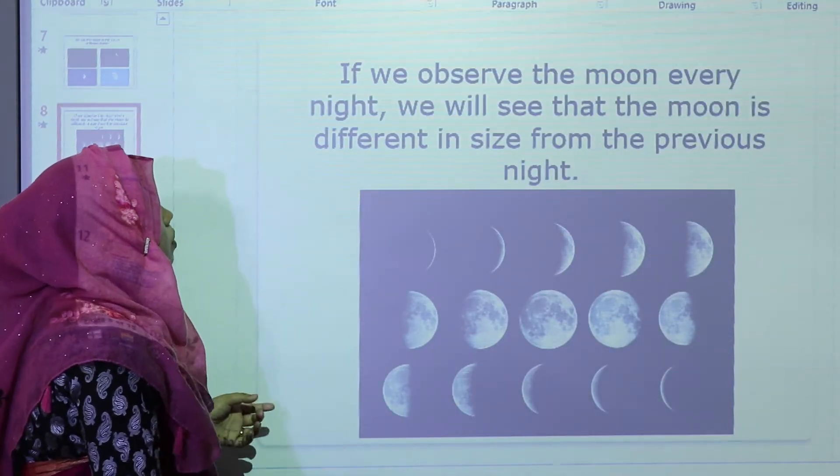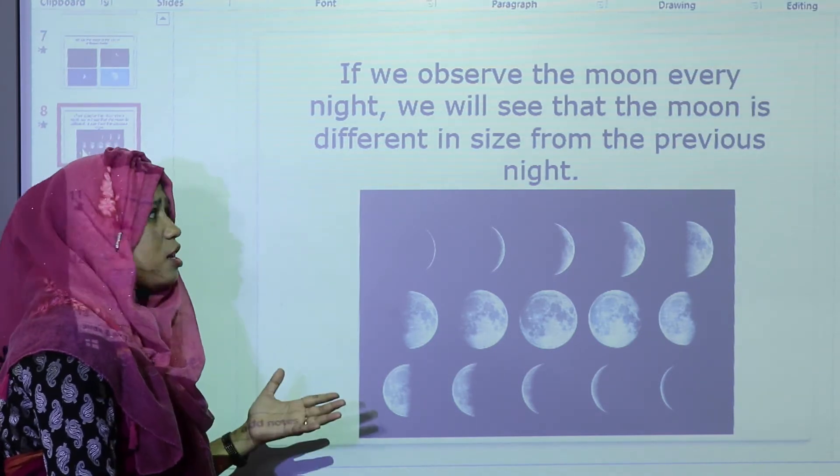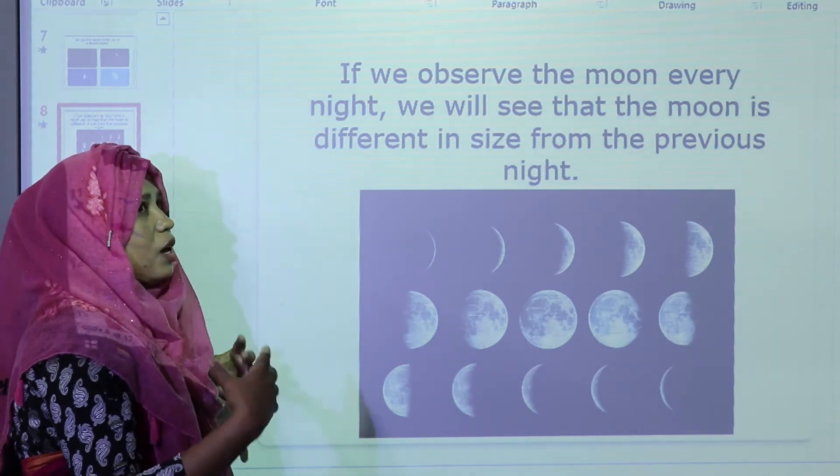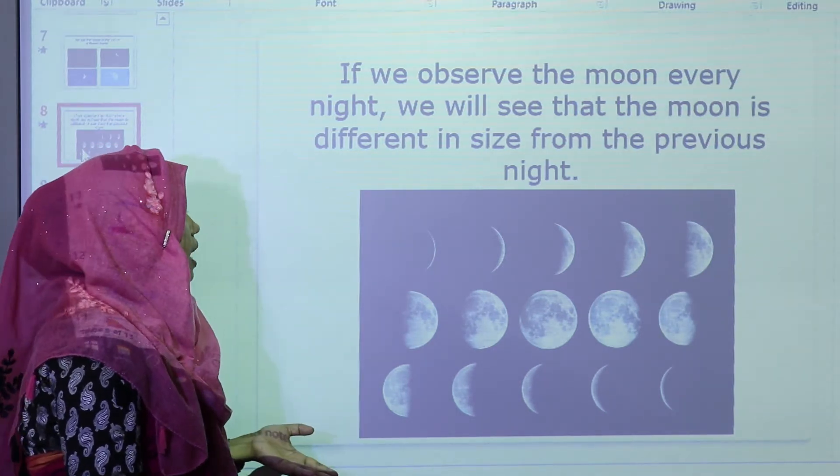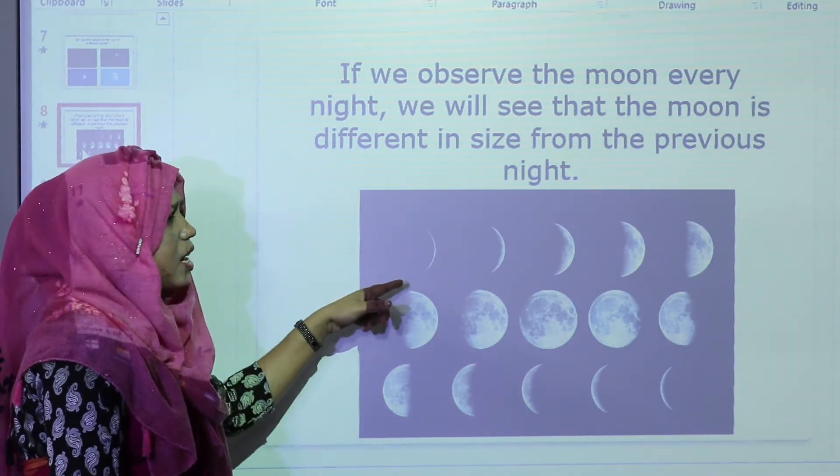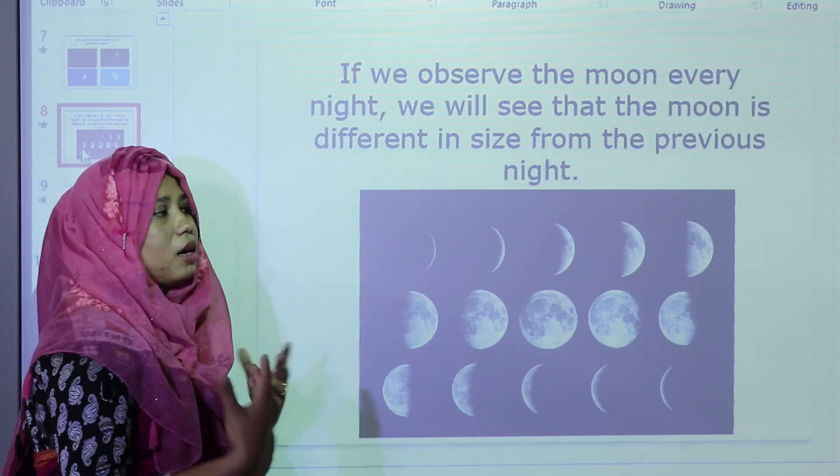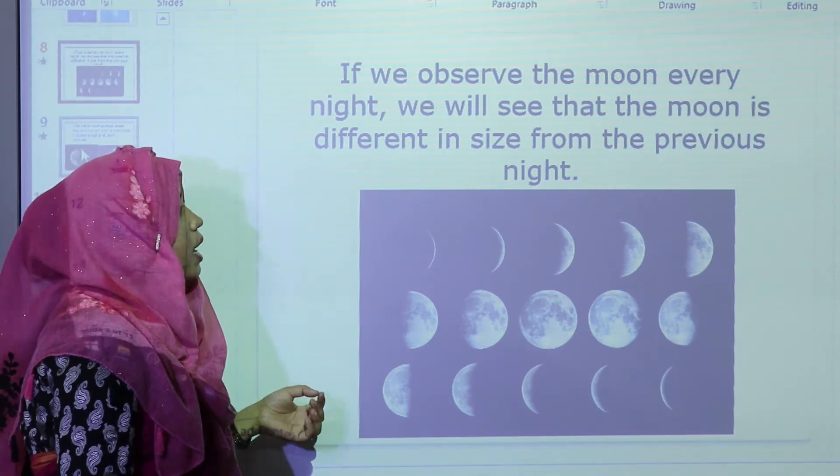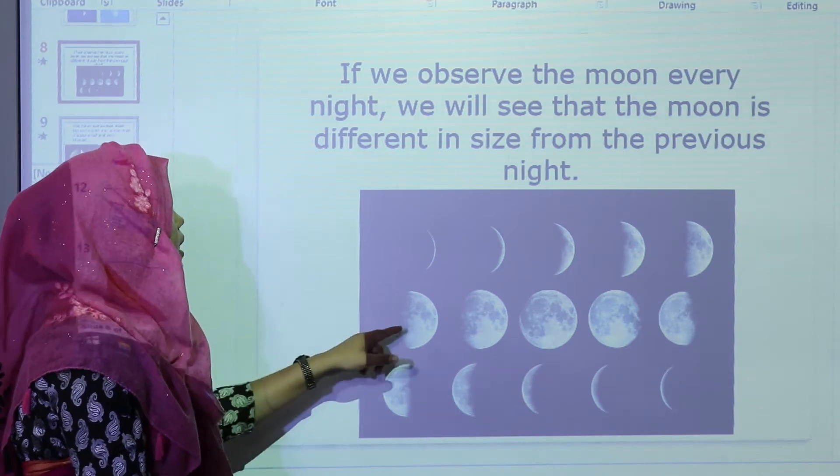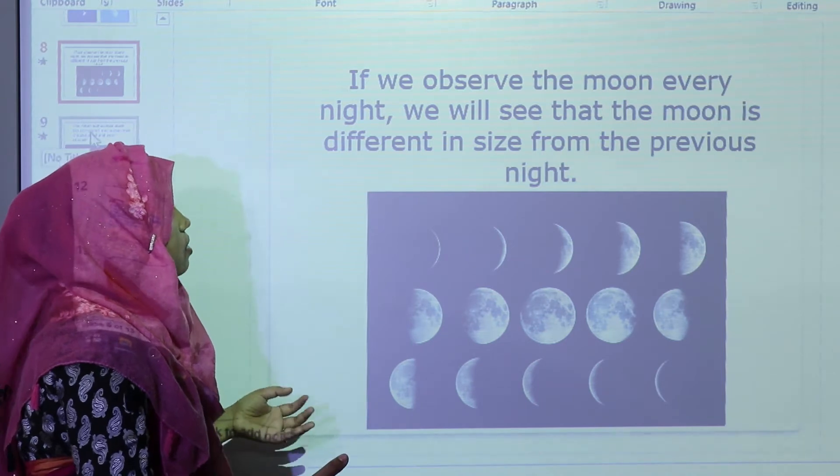If we observe the moon every night, we will see that the moon is different in size from the previous night. This means, imagine that on Saturday night, we look at the sky and see a little moon. But after two days or three days, if we look at the sky, we see that the moon is bigger. This means that moon changes shape.